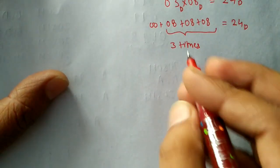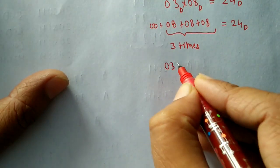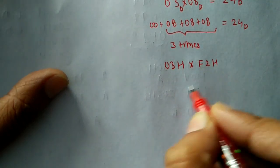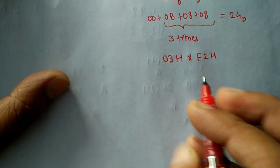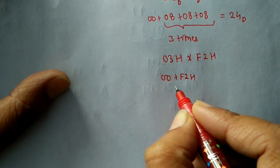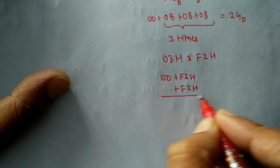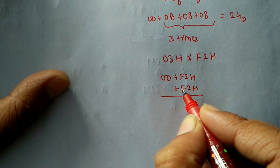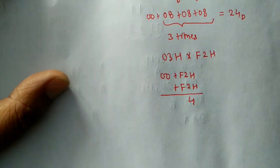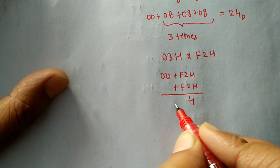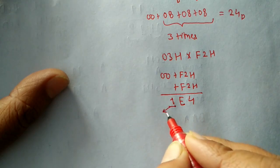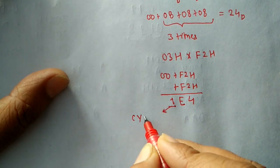Let's see an example. We want to perform 03h multiplied by F2h. We will perform 00h plus F2h, then add F2h again a second time. We get 2+2=4 and F (which is 15 in decimal) plus 15 is 30. 30 in hexadecimal is 1Eh, so 1 appears as the carry flag and E4h remains in the accumulator.